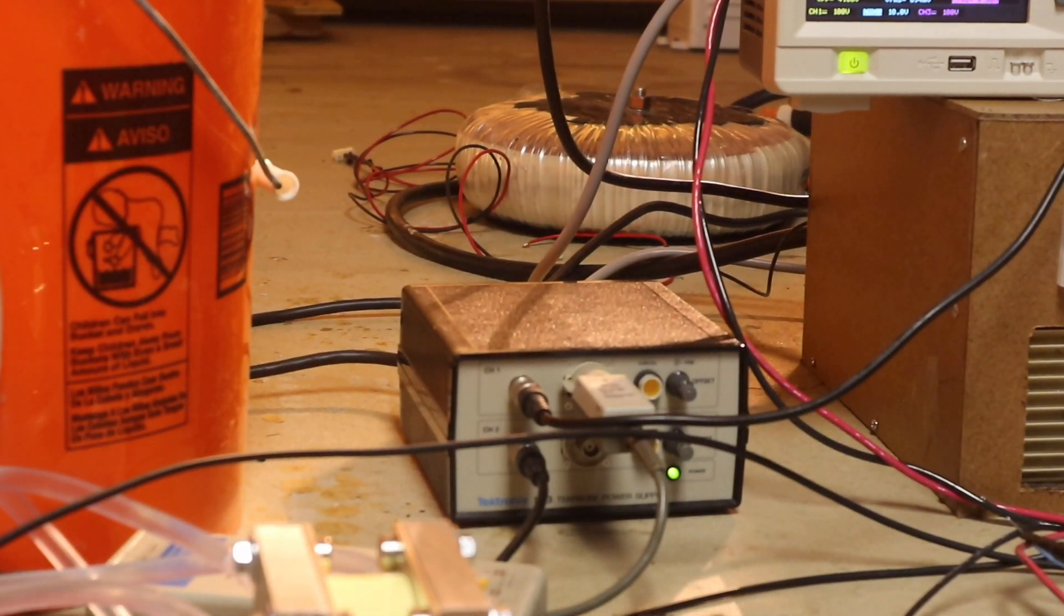This way, if you accidentally touch any of the high voltage components, you are not grounding because that's the whole purpose of an isolation transformer—it's isolated from the ground. Your positive and negative are its own separate loop.